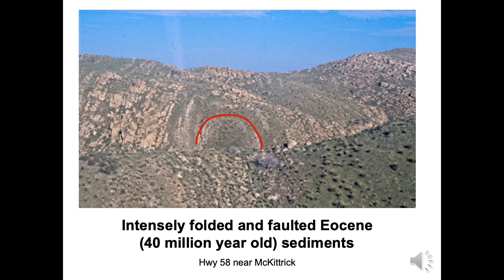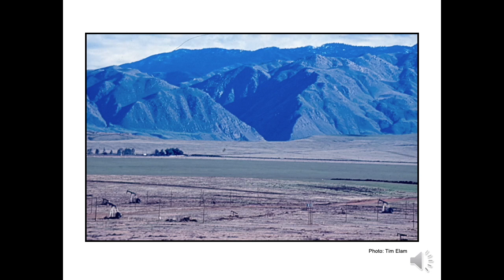Beneath the San Joaquin Valley there is great complexity in the unseen rock layers. Faults and folds are common. The oldest layers, such as these 40 million year old sediments, remain buried except on the basin periphery. Sediments fill the San Joaquin basin via rivers such as the Kern River. The steep-walled Kern River Canyon, which carries Sierra Nevada sediment, is in the center of this photo. For much of geologic time, sediments exited the river into an arm of the Pacific Ocean as you'll see later.